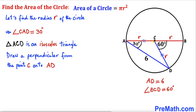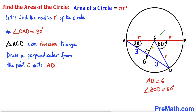Let's draw a perpendicular from point C onto chord AD. This perpendicular gives us a 90-degree angle. Since the two sides are congruent, the perpendicular bisects the chord into two equal parts. If the whole chord AD is 6 units, then each half is 3 units.